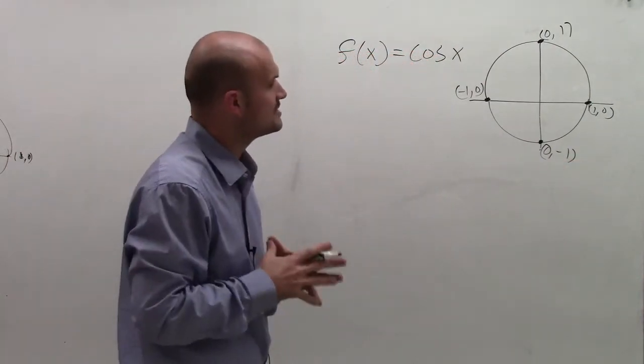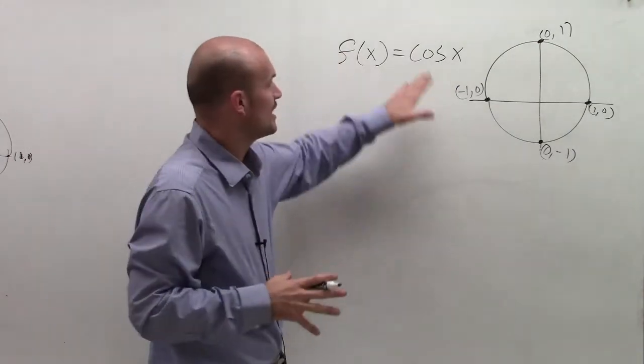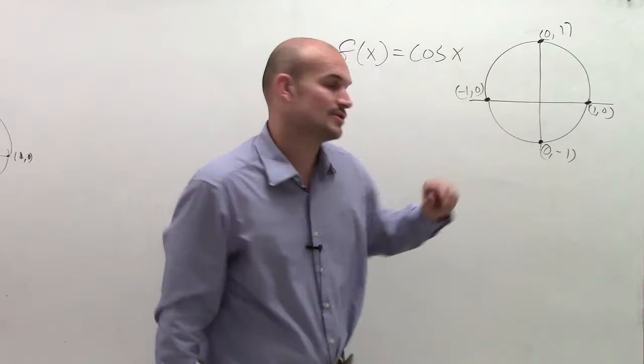So in looking at these important points, these are all going to be your intercepts. What I'm going to do is I'm going to evaluate my cosine function at these certain points for certain angles.